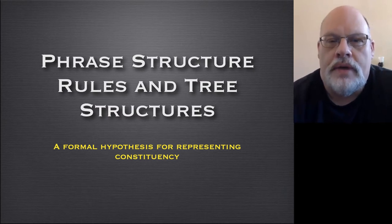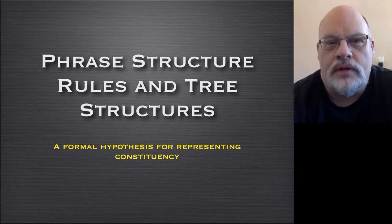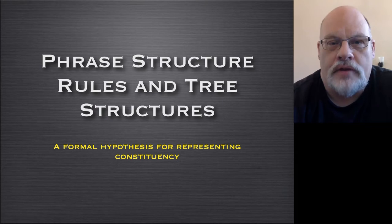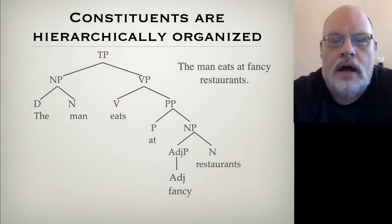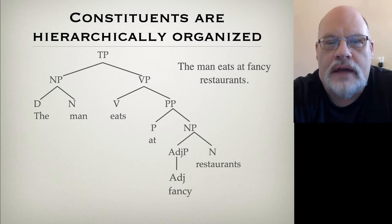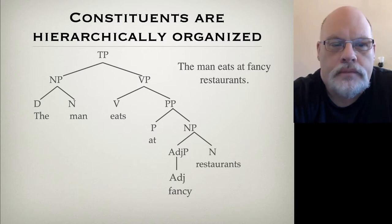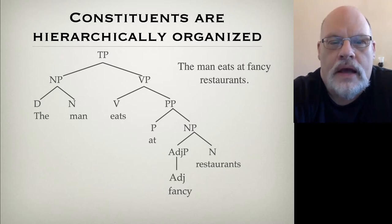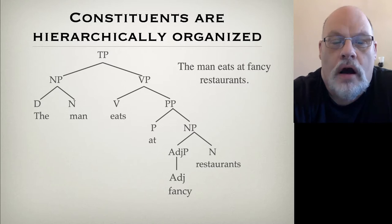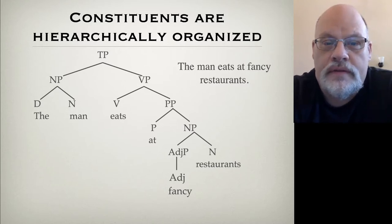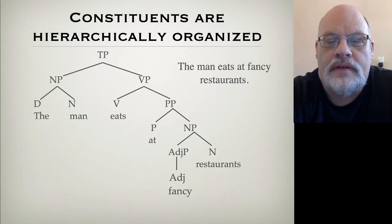Let's start by looking at what the kind of representation we're going to have for sentences would look like, and then we'll look at the rules that would generate that kind of structure. Here's a tree for the sentence we looked at in the previous video: the man eats at fancy restaurants. What you'll see here is that we have various constituents. All of the words are constituents, and then all of the phrases — those are the things that end in a P — are constituents as well.